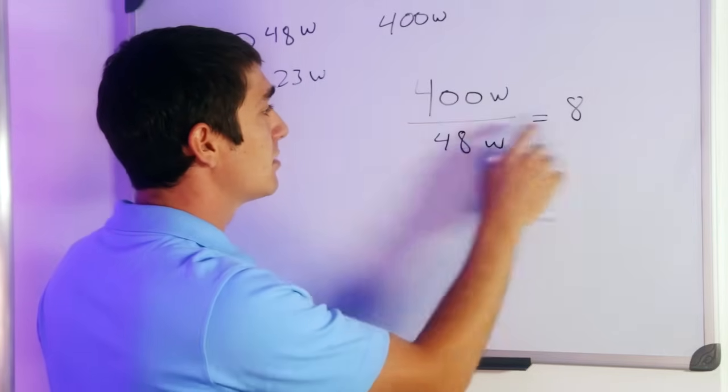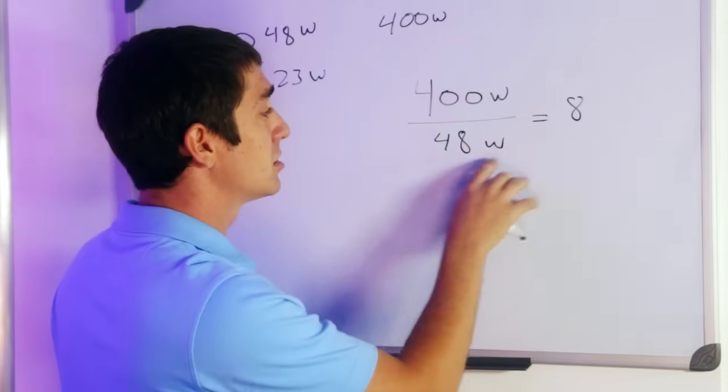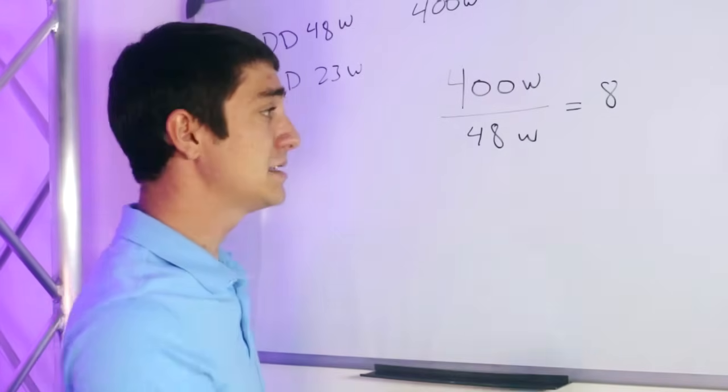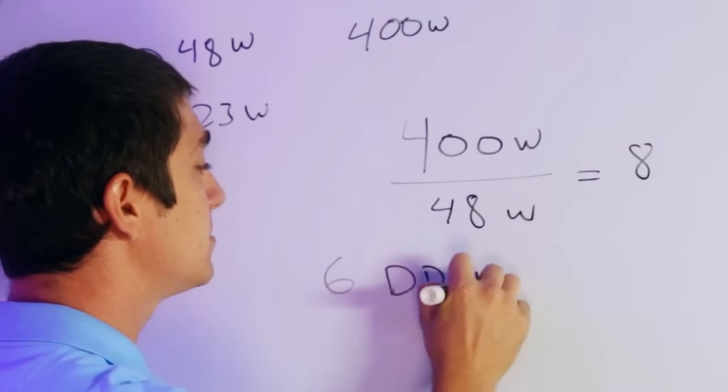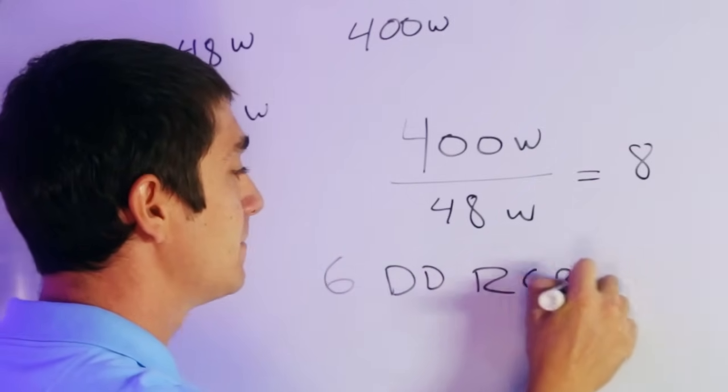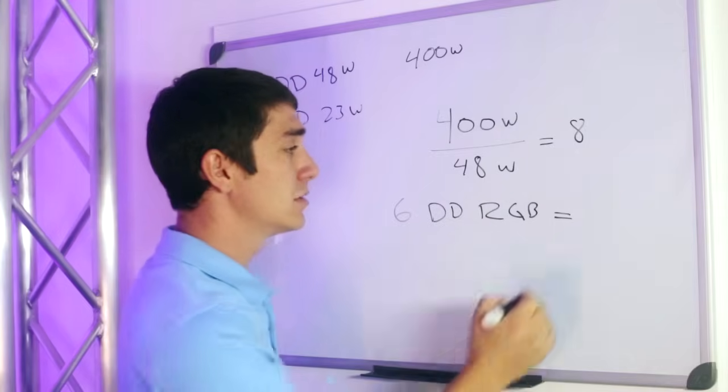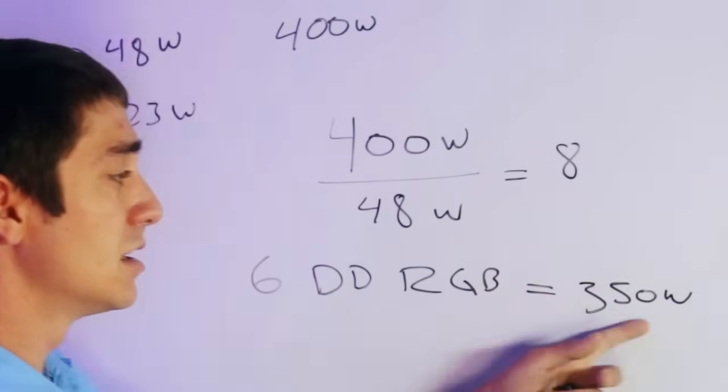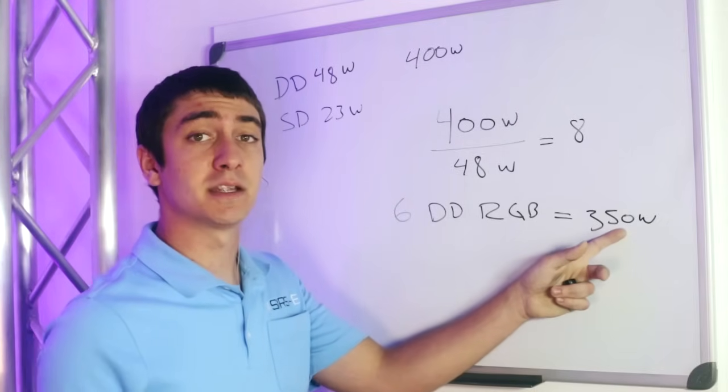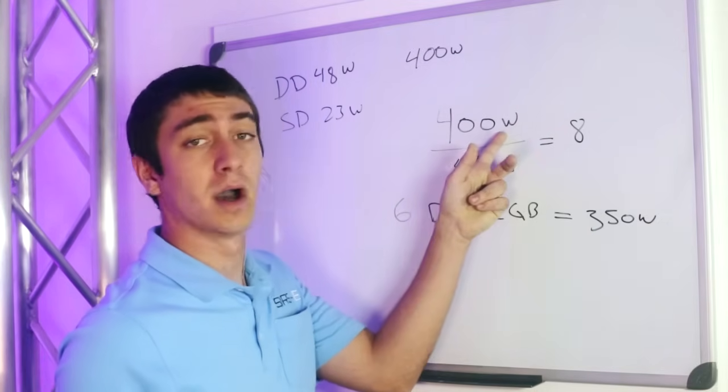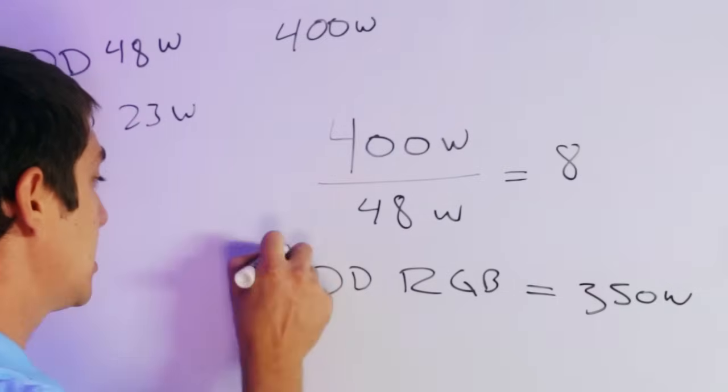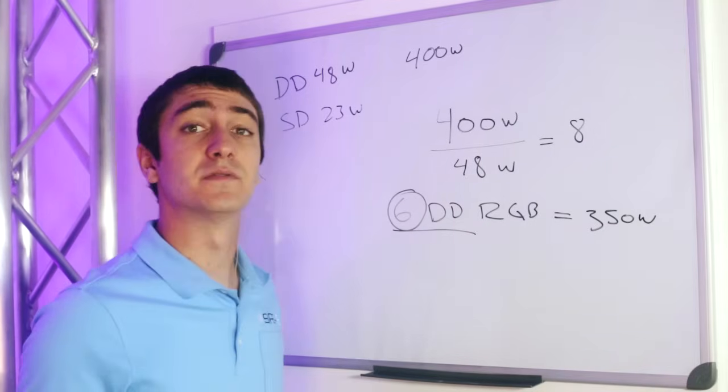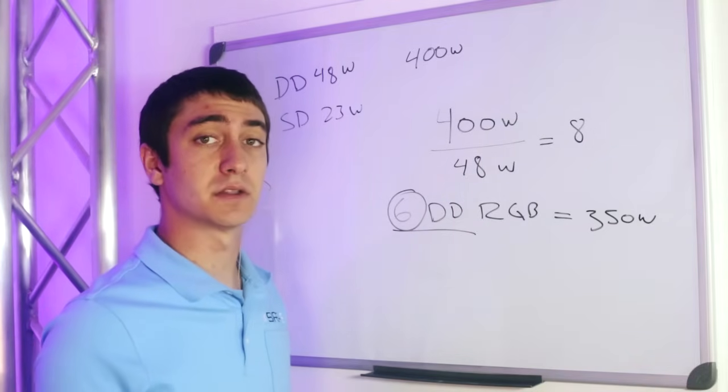So now that we know 8 is 100%, if we do 6 that will be 75% of the capacity. So if we do 6 dual density RGB strips, that will equal to right around 350 watts or so. That right there is about 75% capacity of the 400 watts, which will be perfect to run the strip at. So 6 strips would be the maximum that you can run safely without running into any issues.